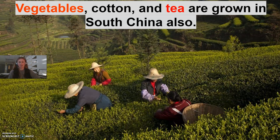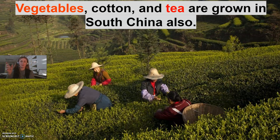Tea is actually what you see these ladies harvesting right here — they're harvesting the tea leaves. Tea starts out as a plant like this; they harvest the leaves, and those leaves are dried and then ground up. If you've ever seen a tea bag, it just looks like those brown dried-up sprinkly things inside — that is just dried leaves, basically. That's all tea is.